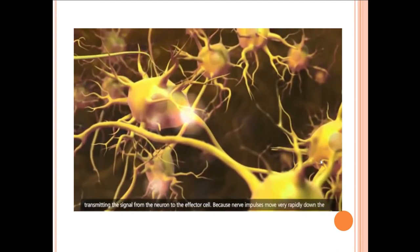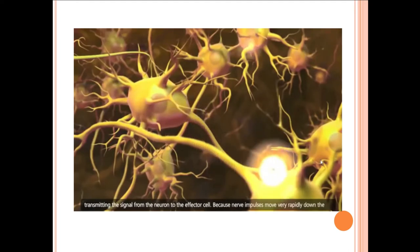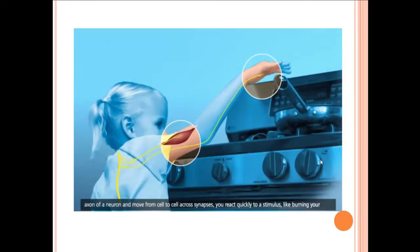Because nerve impulses move very rapidly down the axon of a neuron and move from cell to cell across synapses, you react quickly to a stimulus like burning your finger.